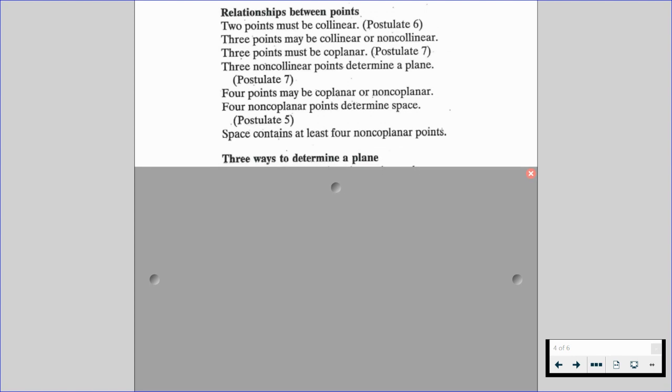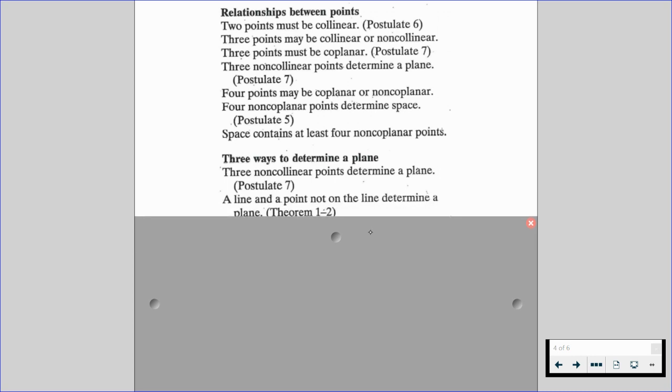And there are three ways to determine a plane. So we could have three non-collinear points determining a plane. We could have a line and a point not on the line that determine a plane. And we have two intersecting lines determine a plane.